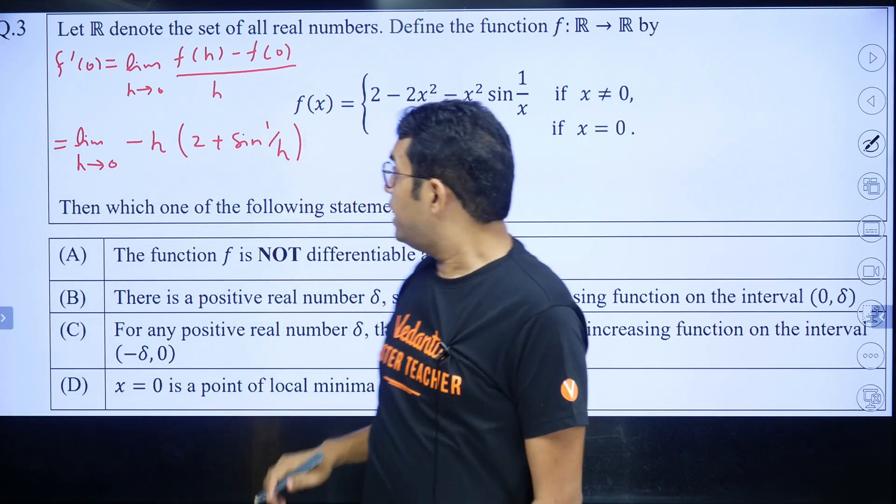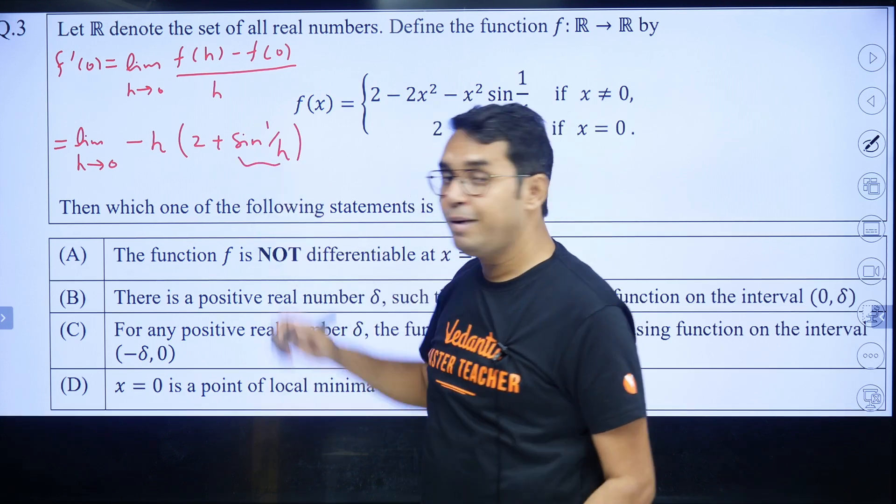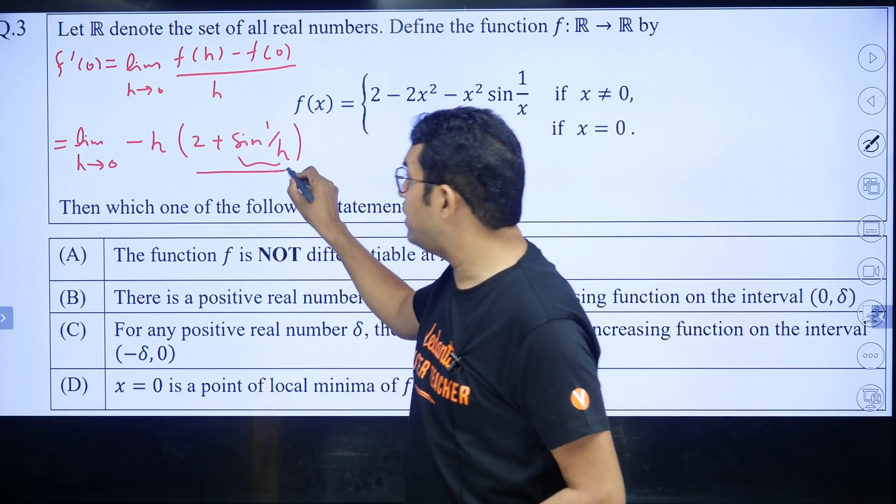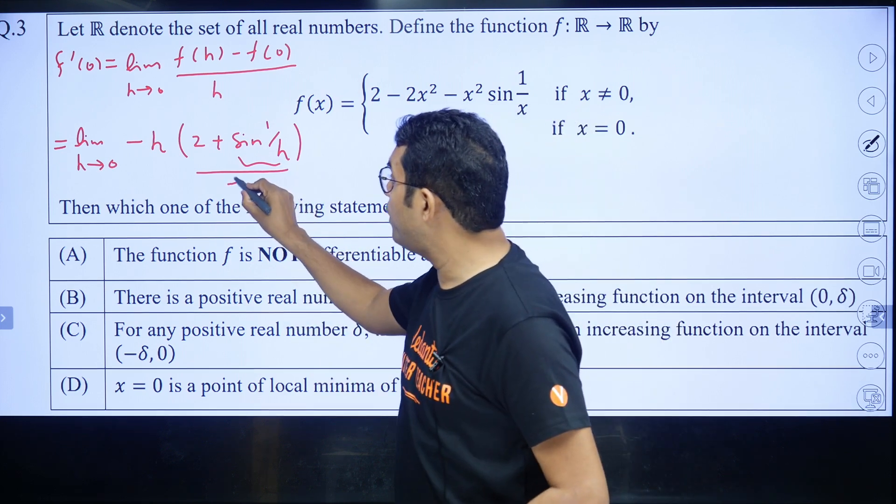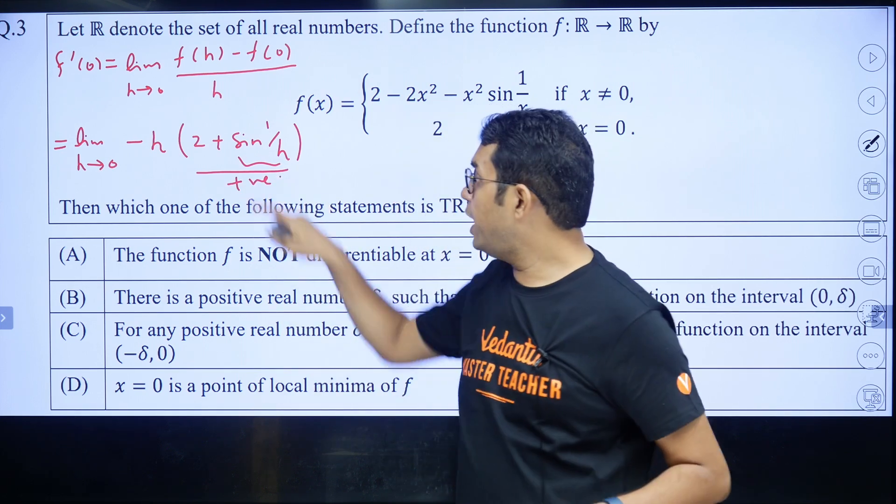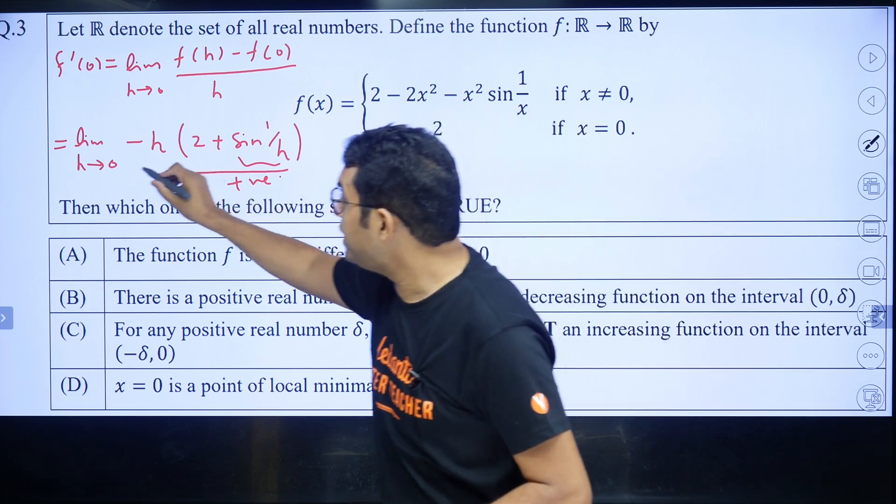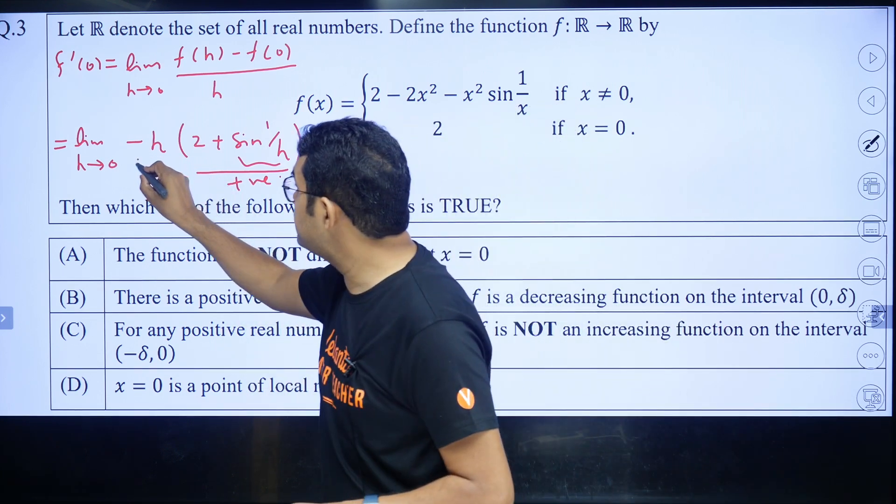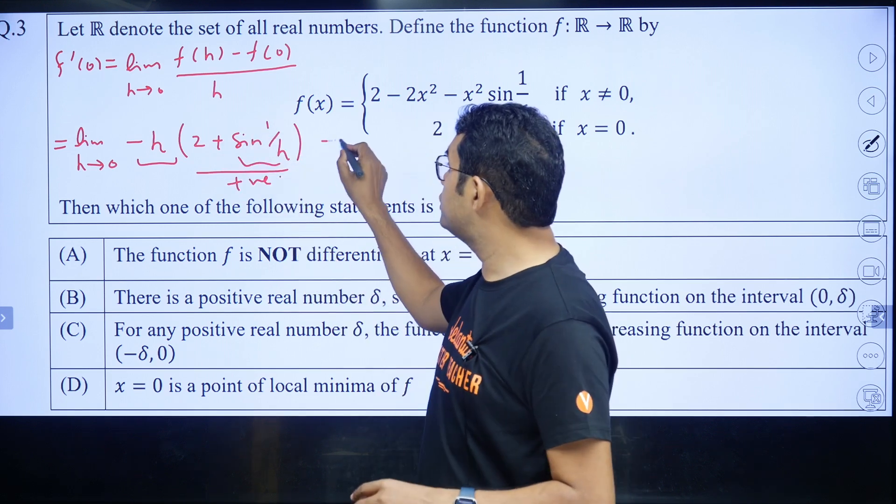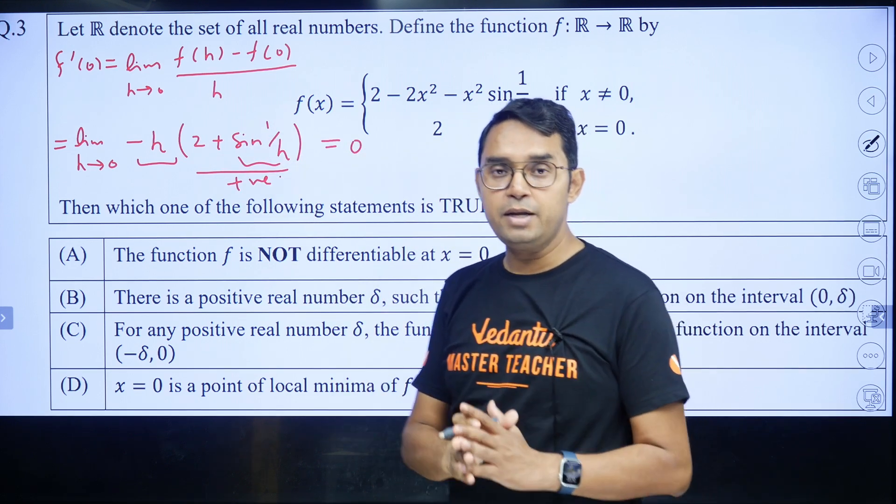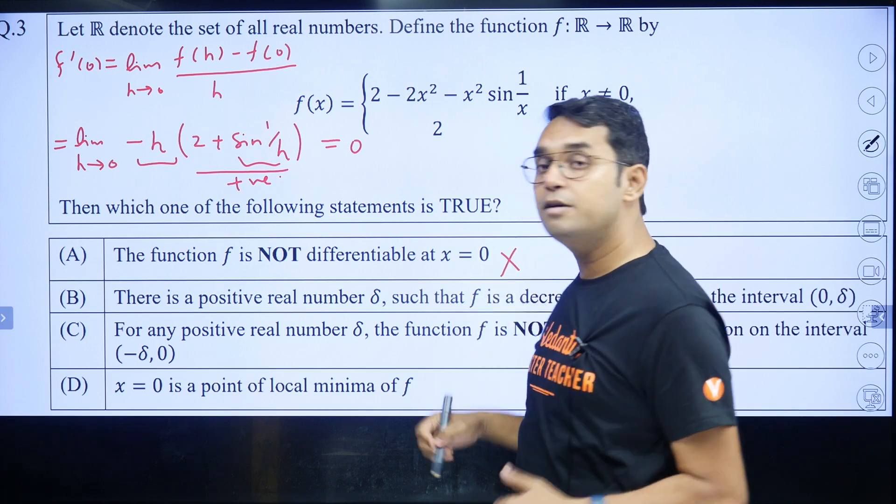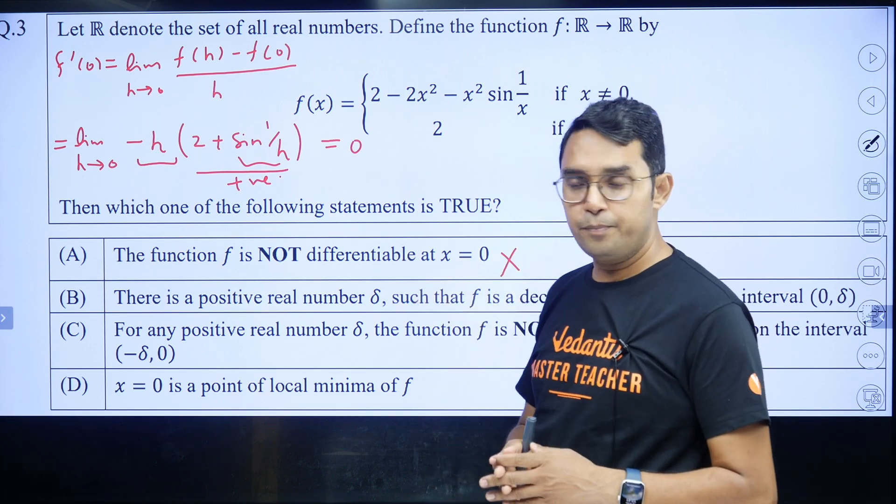So we will be getting minus h into two plus sine one by h. You can check this calculation. Now please see, as h tending to zero, sine one by h will be oscillating function between minus one to one. So this entire thing will be oscillating, but still it will be positive. But as h approaching to zero, whether from positive side or negative side, this will make this entire product to be zero. Hence, my function is having lhd, rhd, both to be equal to zero. So this function is differentiable. So this option is wrong.